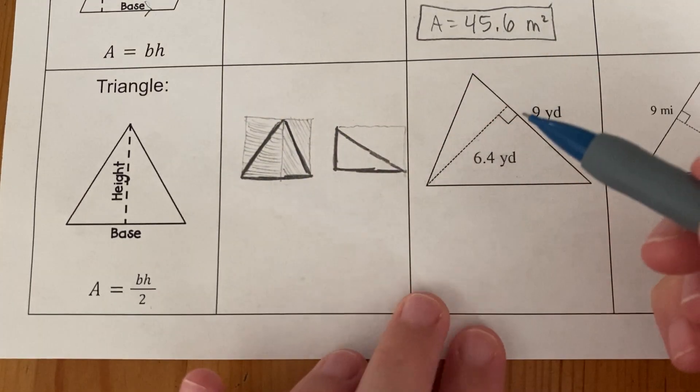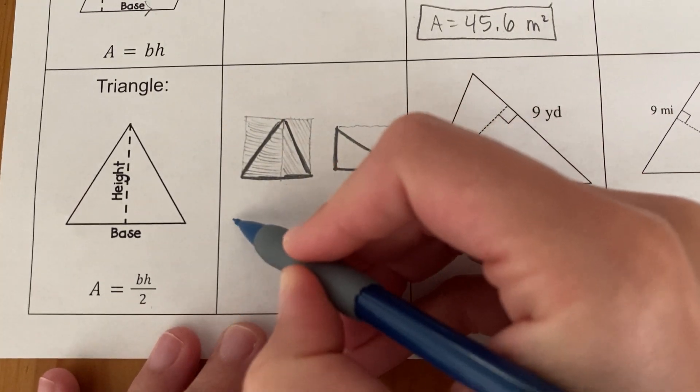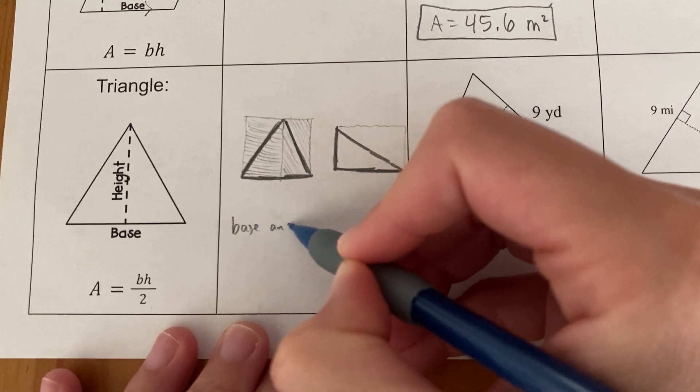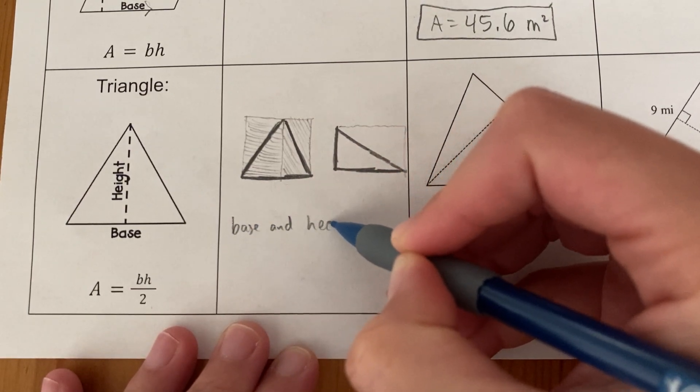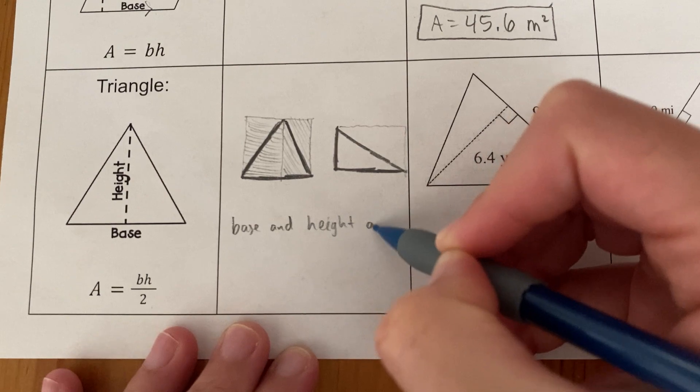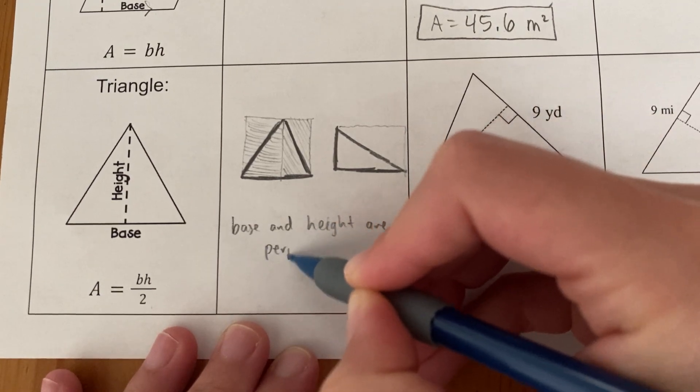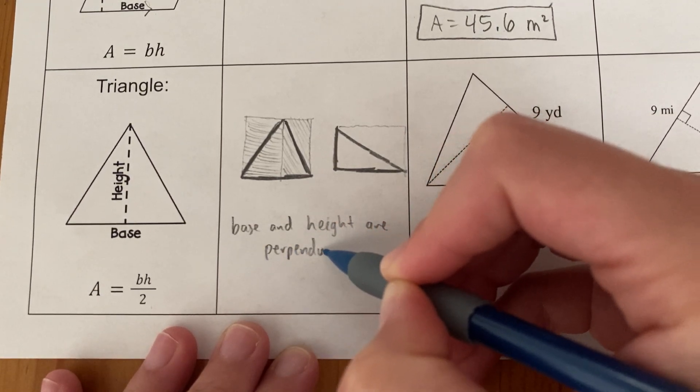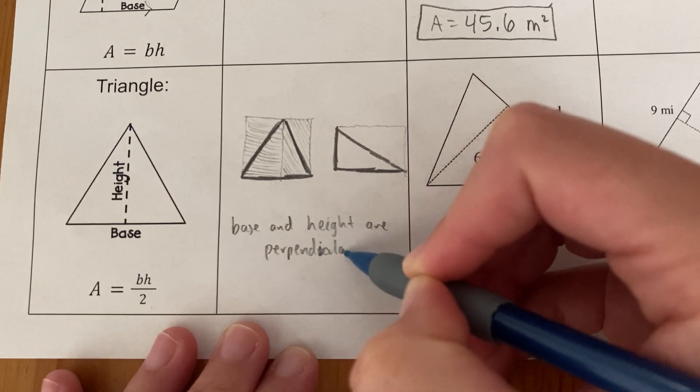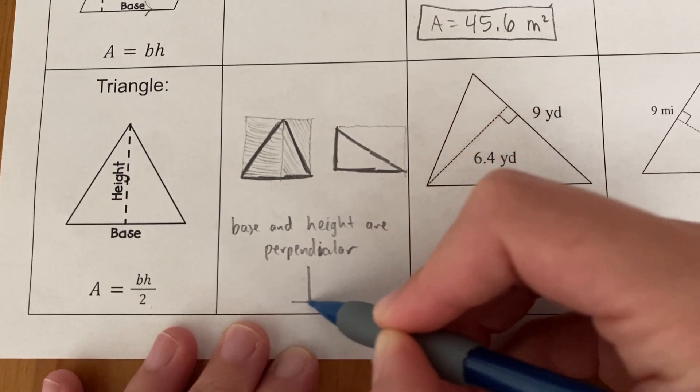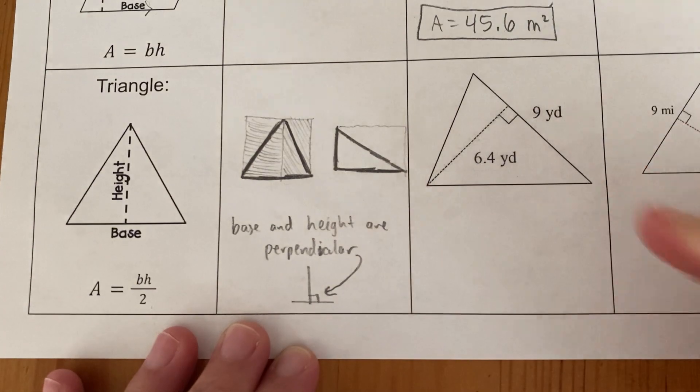So I'm always looking for the base and the height. And here's what you need to remember: the base and height are perpendicular. Perpendicular means they meet at a right angle.